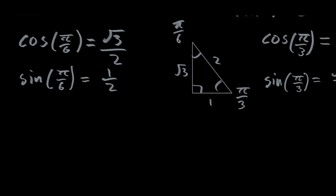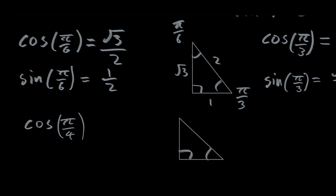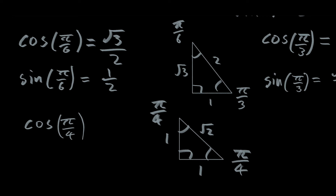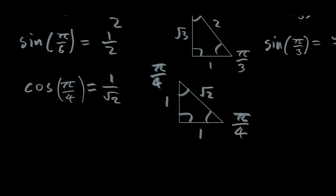All that's left is pi over four. To find the cosine of pi over four, I draw the special triangle that has an angle of pi over four — it actually has two angles of pi over four, since 45 degrees times two is 90 degrees. Since both angles are the same size, they span side lengths of the same length, and the hypotenuse has length root two. The cosine of pi over four is just adjacent over hypotenuse, which is one over root two.